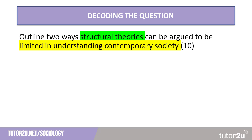The question asks us to outline two ways in which structural theories — that is, functionalism, Marxism, and feminism — can be argued to be limited in understanding contemporary society. We need to identify features of structural theories and then apply those to features of contemporary society.